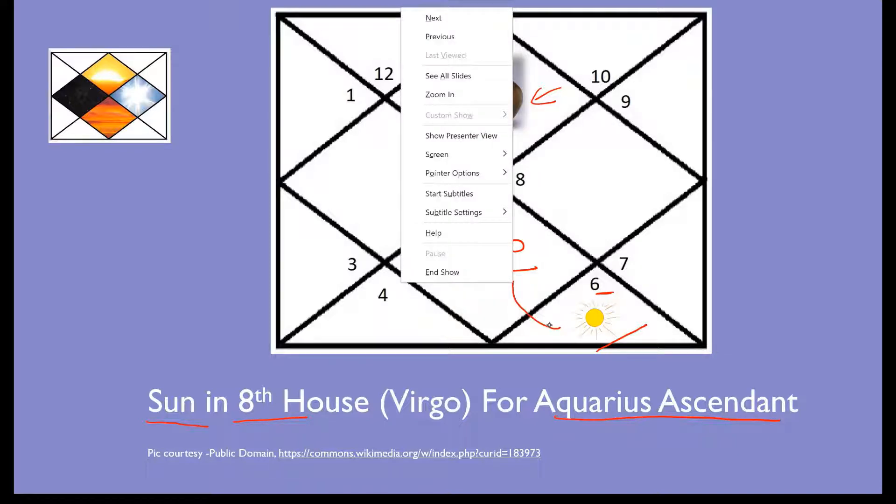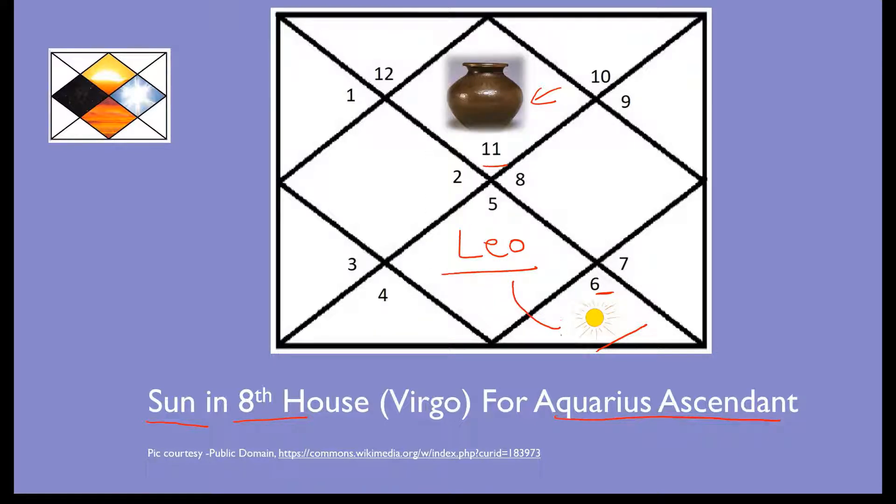This placement is actually very tricky to interpret because first of all eighth house is a house of big mystery. It is never easy to interpret eighth house related affairs. And Sun is an all-important planet - it represents the core of your being, it represents your soul, and in this case it will also represent your seventh house which is your spouse and partnerships.